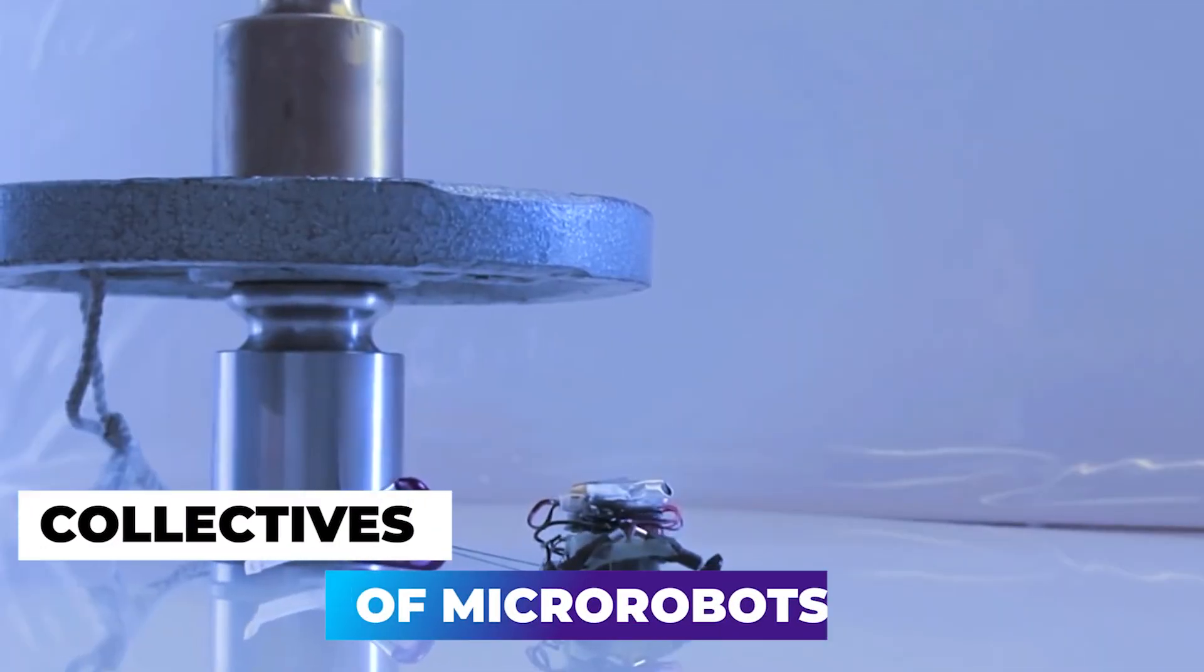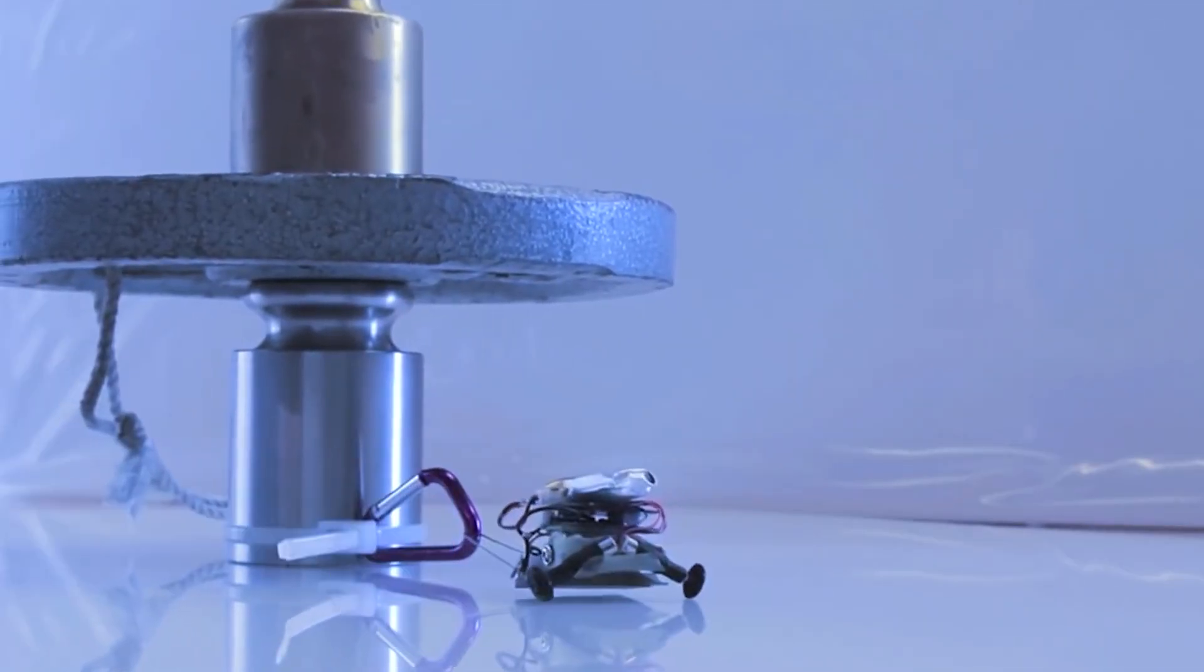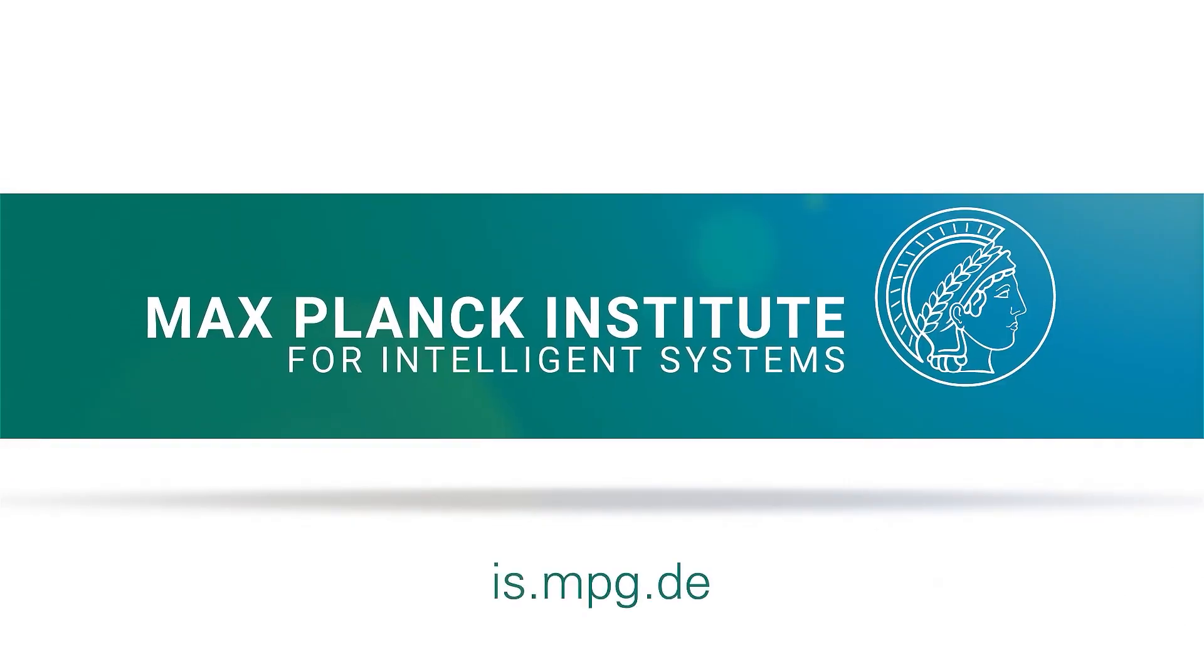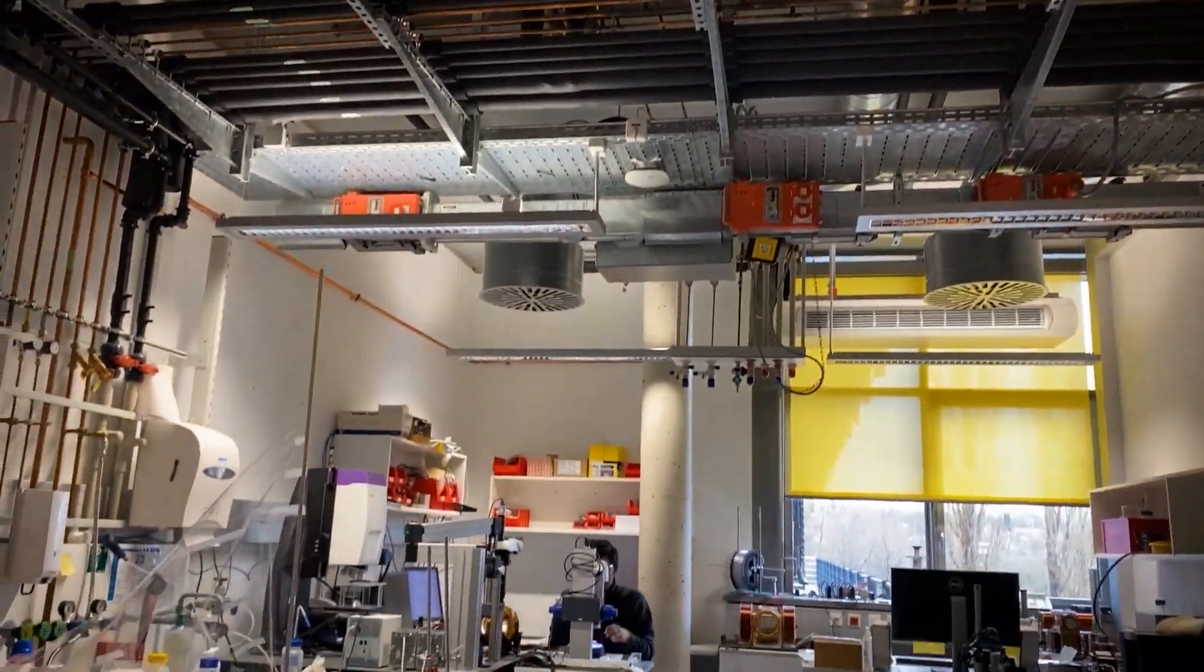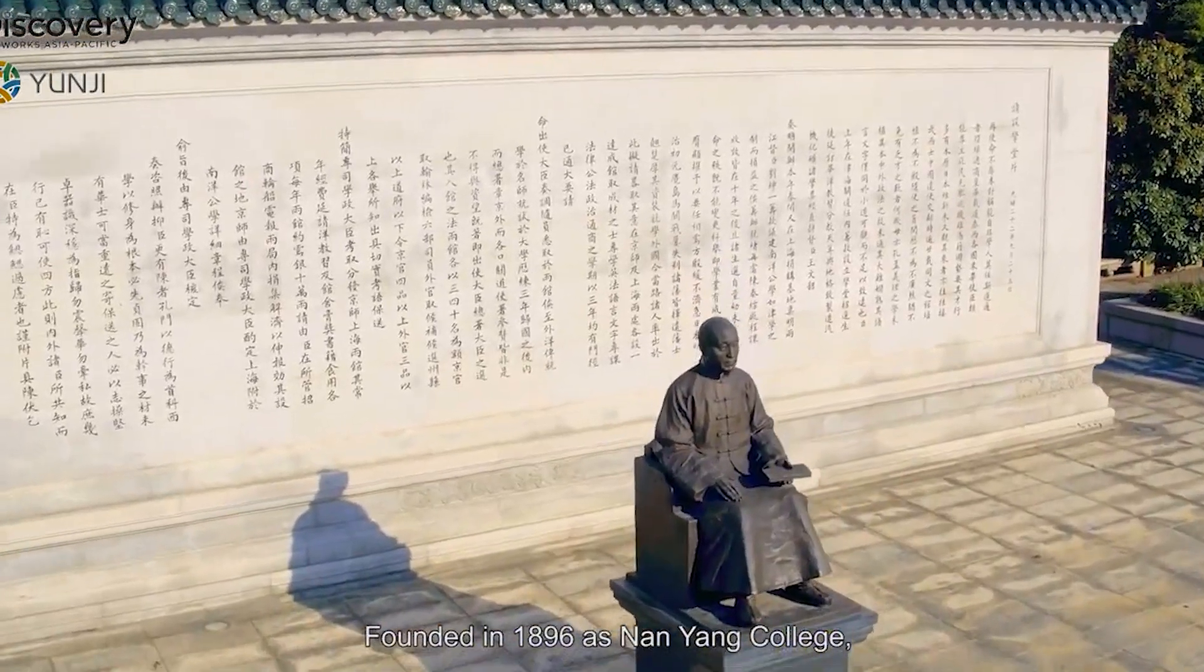Collectives of micro robots move in a variety of ways. Micro robot collectives that may move in any desired arrangements have been developed by researchers at the Max Planck Institute for Intelligent Systems, Cornell University, and Shanghai Jiao Tong University.